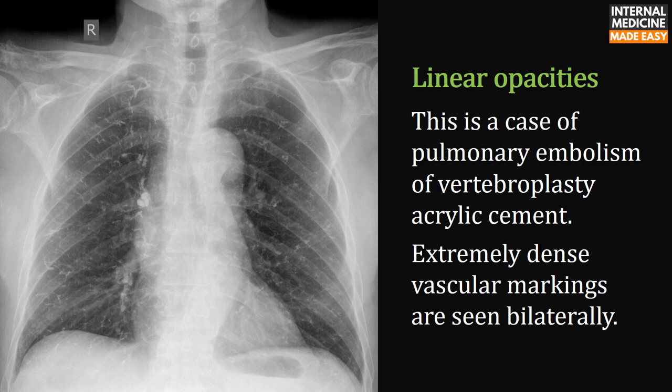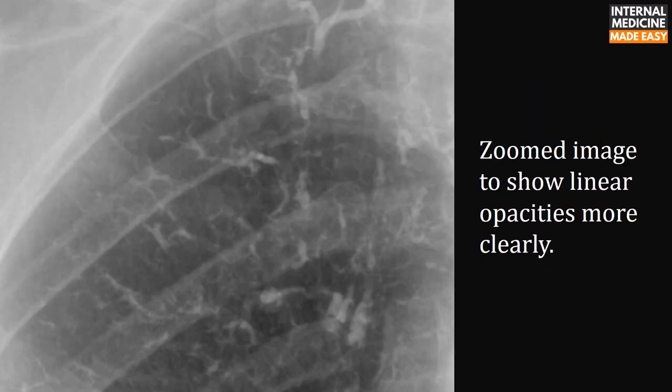This is an X-ray showing linear opacities in a case of pulmonary embolism from vertebroplasty acrylic cement. There are extremely dense vascular markings bilaterally. A zoomed image is shown to demonstrate the linear opacities more clearly.